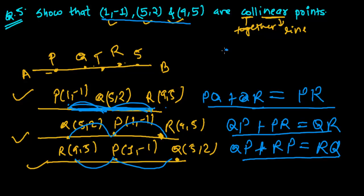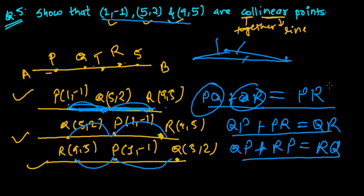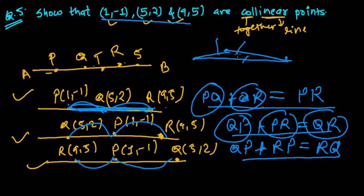If the points are not collinear — suppose P, Q, R form a triangle — then by the triangle inequality, the sum of any two sides is always greater than the third side. So if PQ plus QR is greater than PR, they are not collinear and will form a triangle instead.